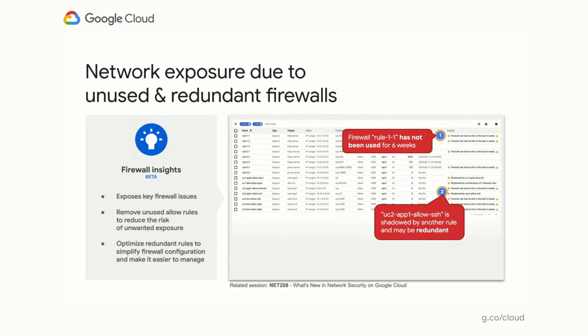Steve feels that he is now in the position to not only establish the principle of least privilege, but actually maintain it — instead of simply granting all permissions to everyone who comes to him with 'my access isn't working' type of issues. Next he turns to the network. Firewall is one of the most fundamental protection layers. Managing it, however, is a major challenge for Steve. His firewall configuration grew really complex, as more and more access was added over time. So he's afraid to even touch it, as he knows that this will likely break something.